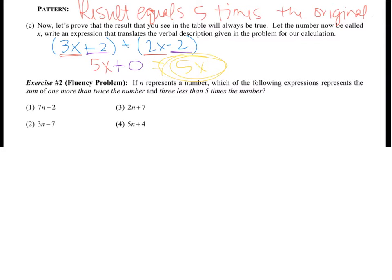If n represents a number which of the following expressions results in the sum of 1 more than twice the number and 3 less than 5 times the number. So we need to write out each part of this. Sum of, meaning we're going to add, and we have 2 things that we're going to add together. The first one is 1 more than twice the number. So twice the number plus 1. And the next part is 3 less than 5 times the number. So 5 times the number minus 3. We're going to combine like terms. So 2x and 5x becomes 7x. And then we have 1 and negative 3 combined to make negative 2. Obviously, I used the wrong variable there. But number 1 is the one that matches. 7n minus 2 or 7x minus 2.